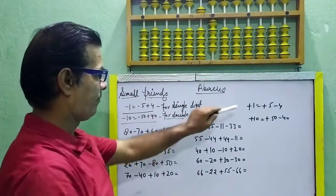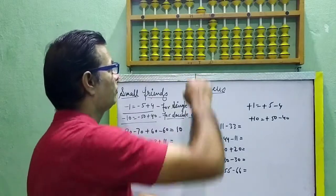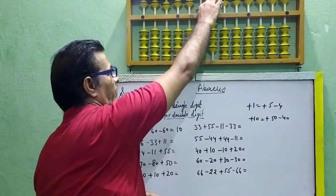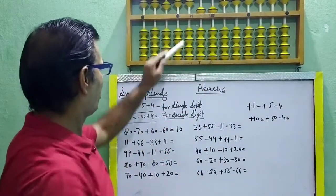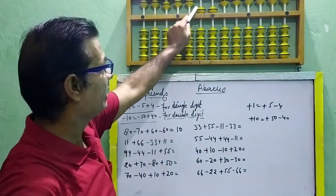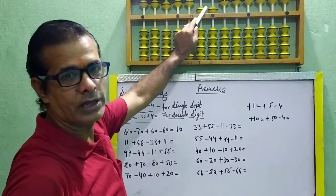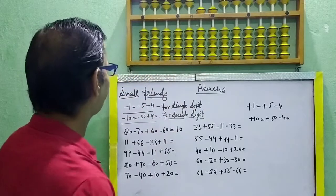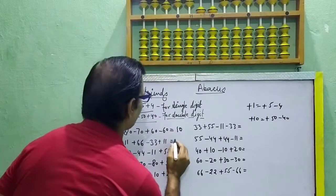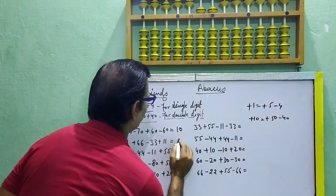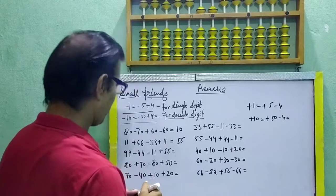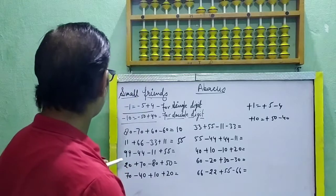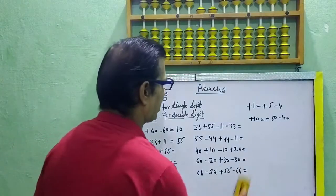1 plus 1 is equal to plus 5 minus 4. Then your answer is here: 55.